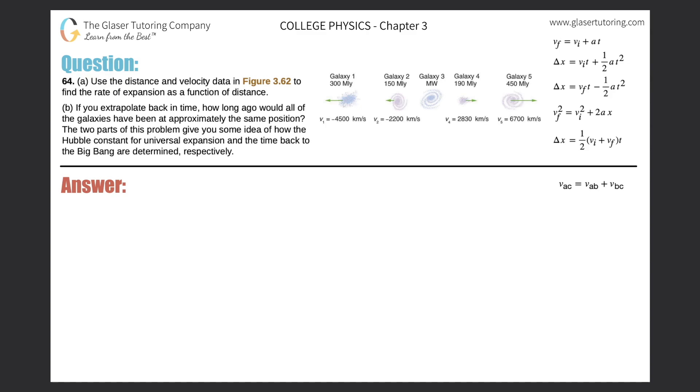Number 64, letter A. Use the distance and velocity data in figure 3.62 to find the rate of expansion as a function of distance. Let's take a look at this data. They tell us that for galaxy 1, it's moving away relative to galaxy 3 at a certain velocity, and it's also a certain distance away. The MLY stands for million light years.